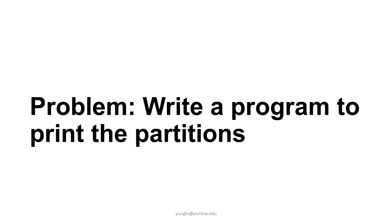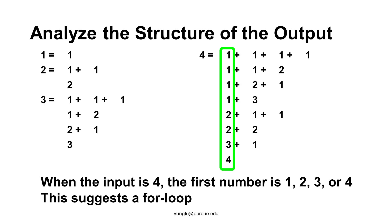The problem we want to solve is to write a program that prints these partitions. Consider the scenario when we want to partition number 4. Let's focus on the first number used for the partitions. The first number can be 1, 2, 3, or 4. This suggests using a for loop with numbers 1, 2, 3, and 4.